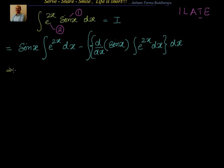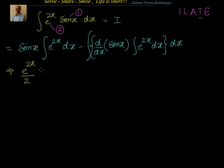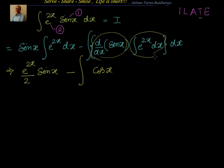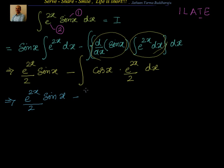The next step: the integral of e power 2x is e power 2x by 2. In derivative we multiply, whereas in integration we divide. So the next step will be e power 2x by 2 multiplied with sin x, minus the integral of — d by dx of sin x is cos x — multiplied with e power 2x by 2. This whole thing I have to integrate. The next step: e power 2x by 2 into sin x, and can I take 1 by 2 out? Yes. Then I will have the integral of e power 2x cos x.